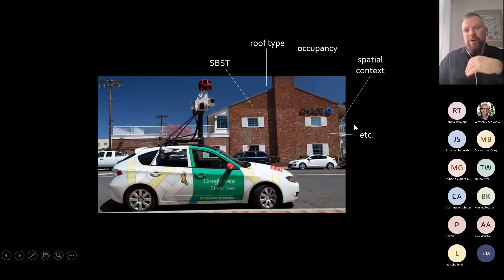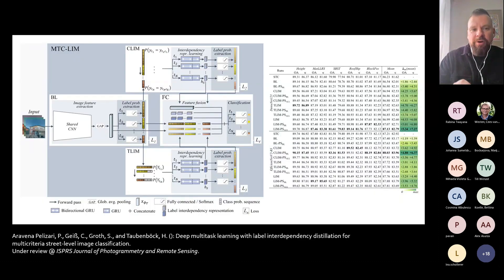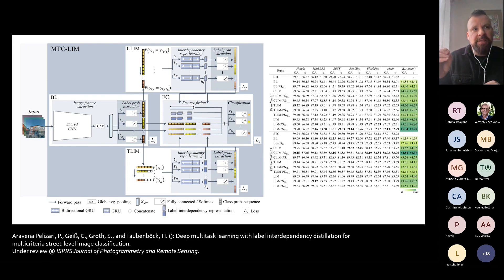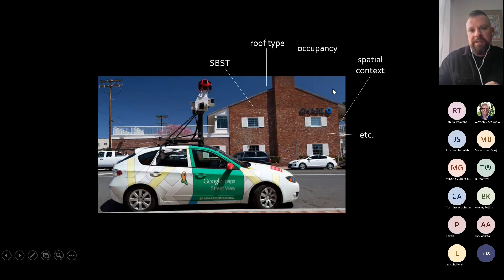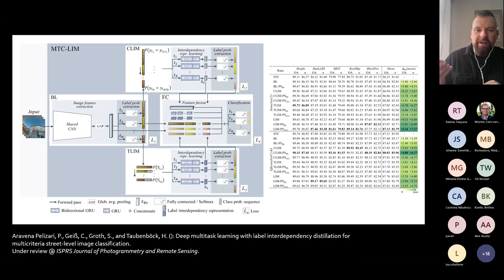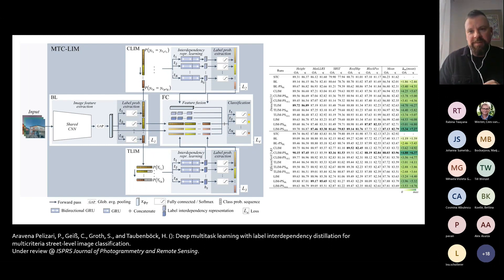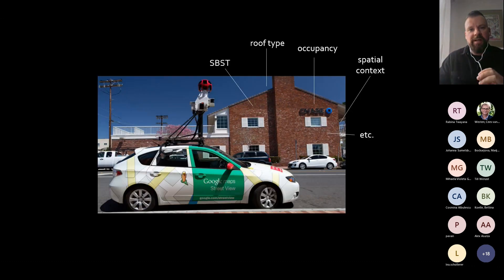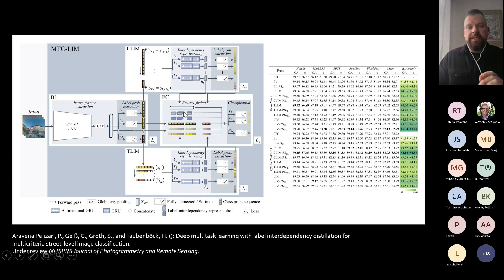From a methodological level, this opens up an interesting pathway called multitask learning. The basic idea is that we actually want to estimate multiple target variables simultaneously, and those variables feature an interdependency — quite intuitively, if you want to build a very high building you need specific materials, so you will very unlikely find a wooden construction with 20 floors. There are multiple such interdependencies regarding the description of the built environment. We designed a specific deep learning model that is able to exploit those interdependencies in order to make a better prediction.